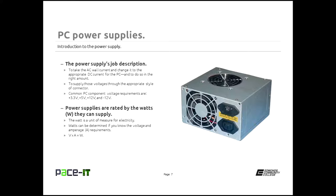Power supplies are rated by the watts that they can supply. A watt is a unit of measure for electricity, and watts can be determined if you know your voltages and your amperage requirements. The actual formula is volts times amps equals watts. So if you have a requirement of 12 volts and 5 amps, you would need 60 watts of power.